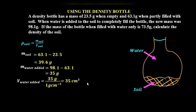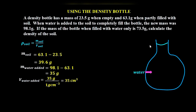Next, we determine the volume of the density bottle. We are told the mass of the bottle when filled with water only is 73.5 grams. Water added to an empty density bottle until full will occupy the entire volume of the bottle. So if we get the volume of water in this density bottle, that should be equivalent to the volume of the density bottle.